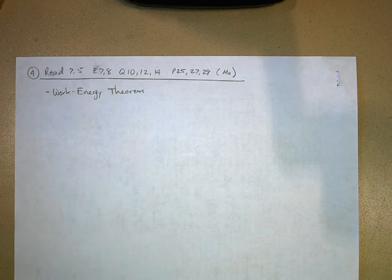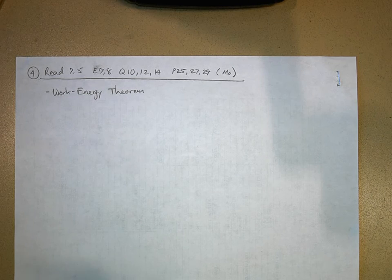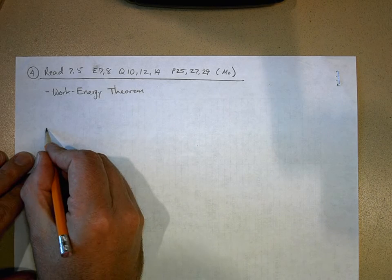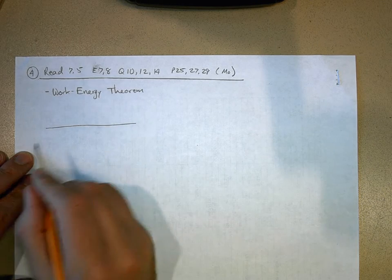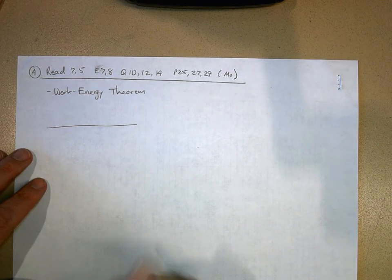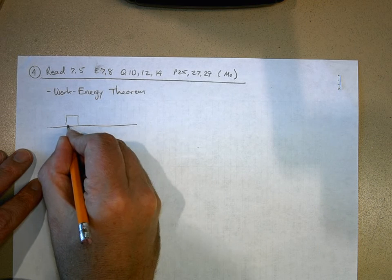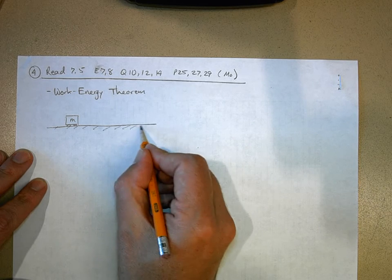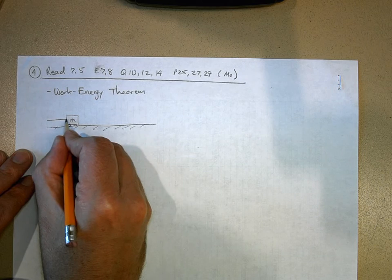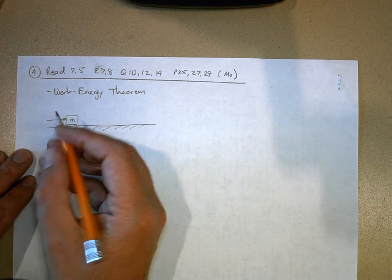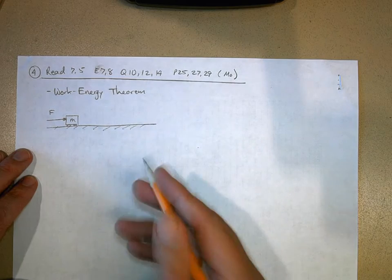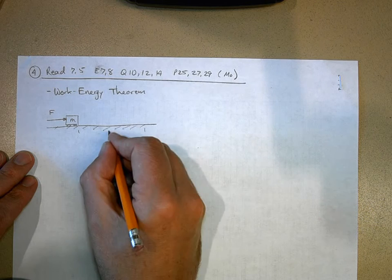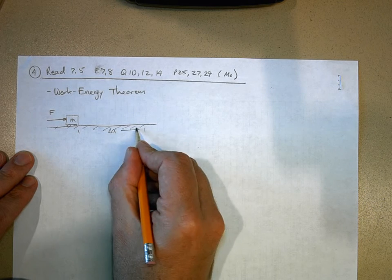What we're going to do is look at the work done by a net force acting on an object, and then see what the result of all that work is going to be. We're going to call that result a change in kinetic energy. Let's take a look at a real simple situation. Here's some massive crate on a horizontal flat plane. I'm going to apply a force to it. I'm just going to call it F right now, and this force is going to be a constant force. It's going to make this thing go some displacement delta x like that.